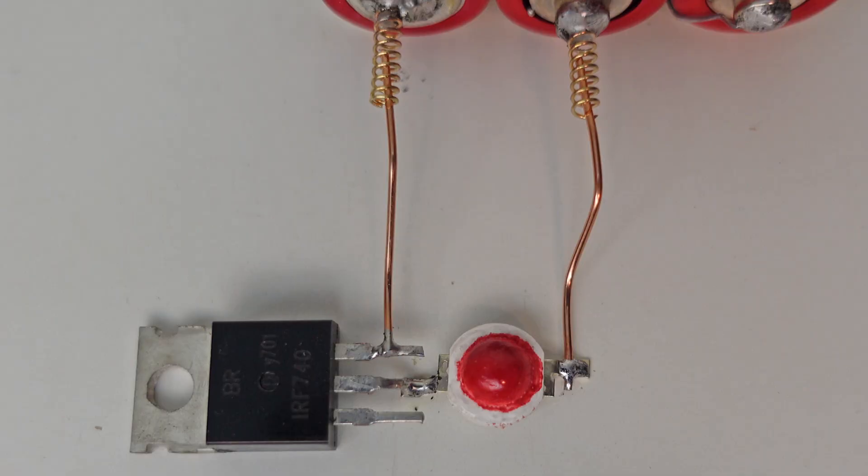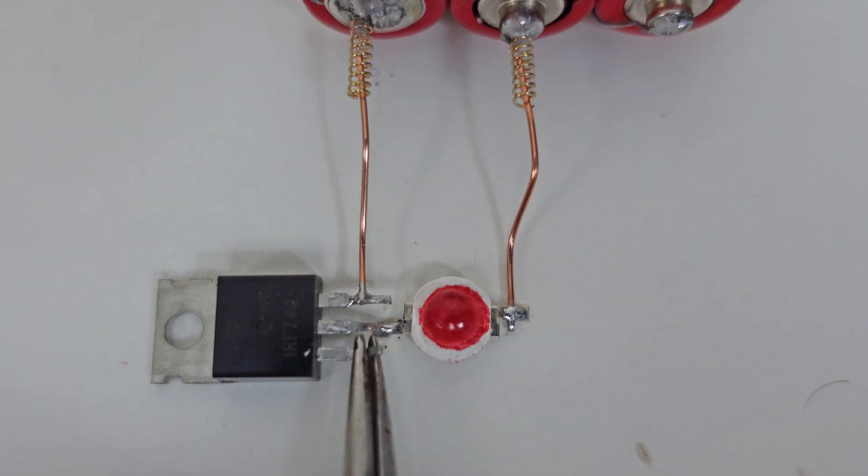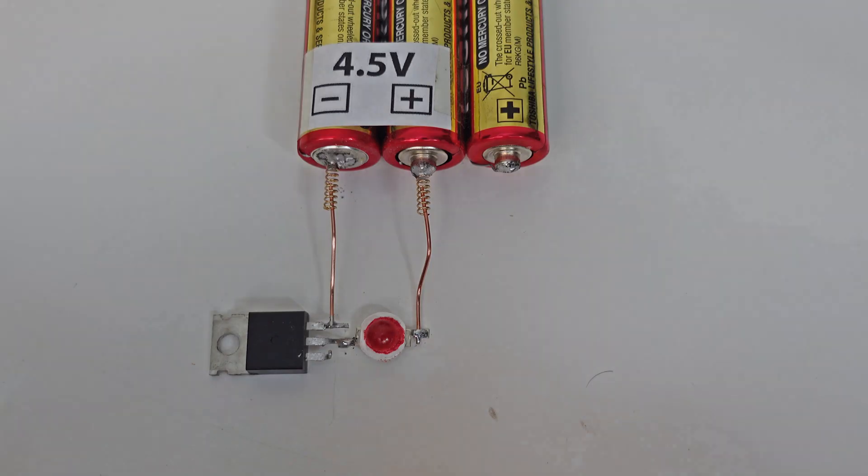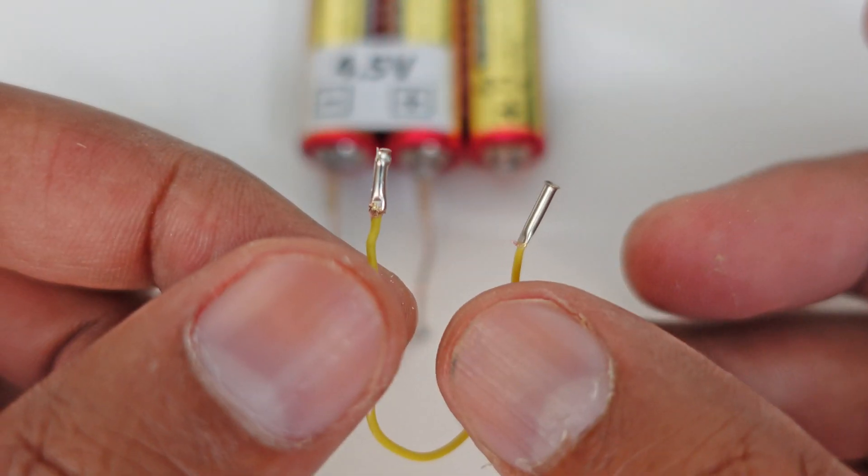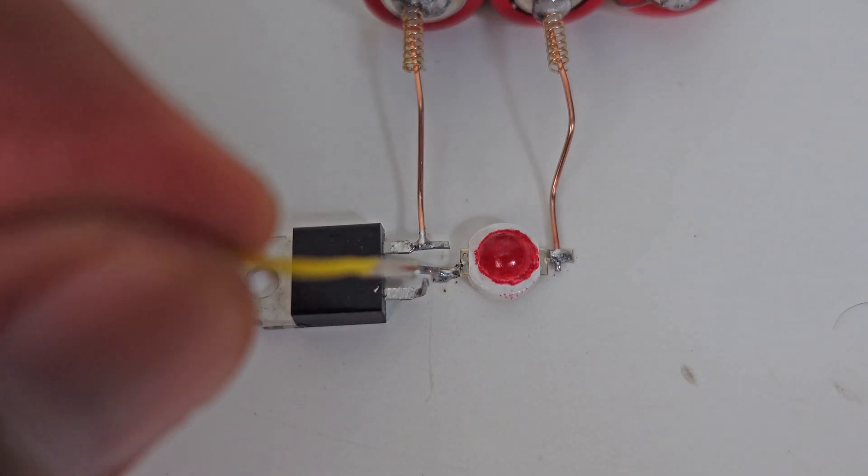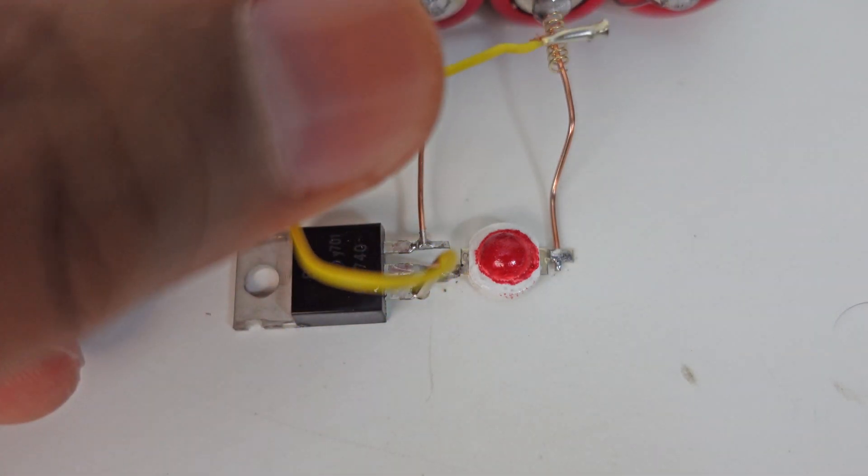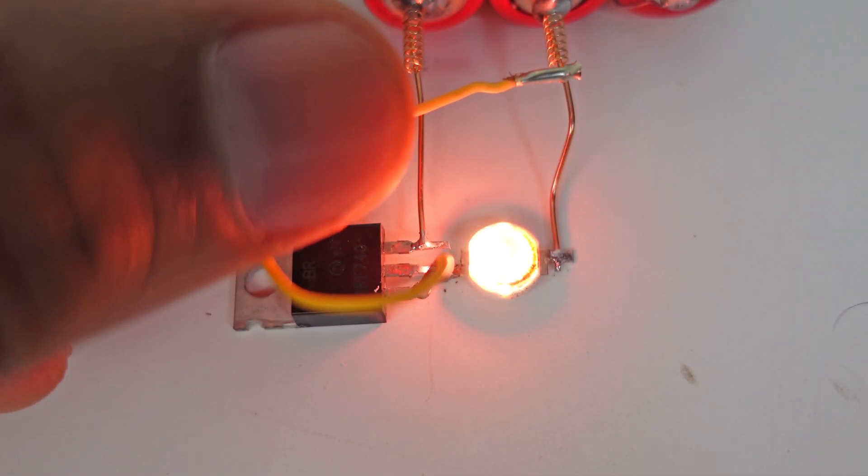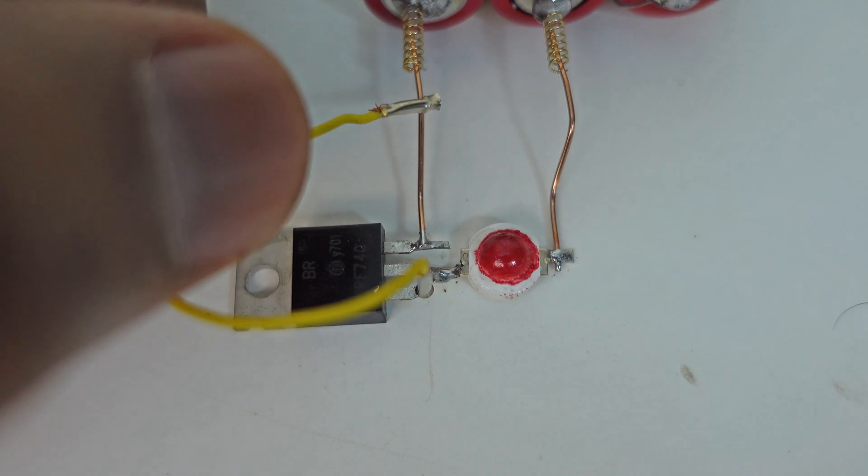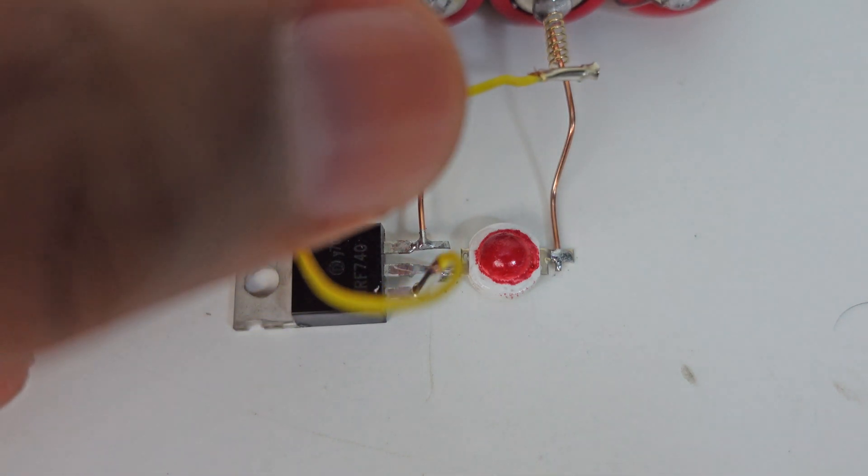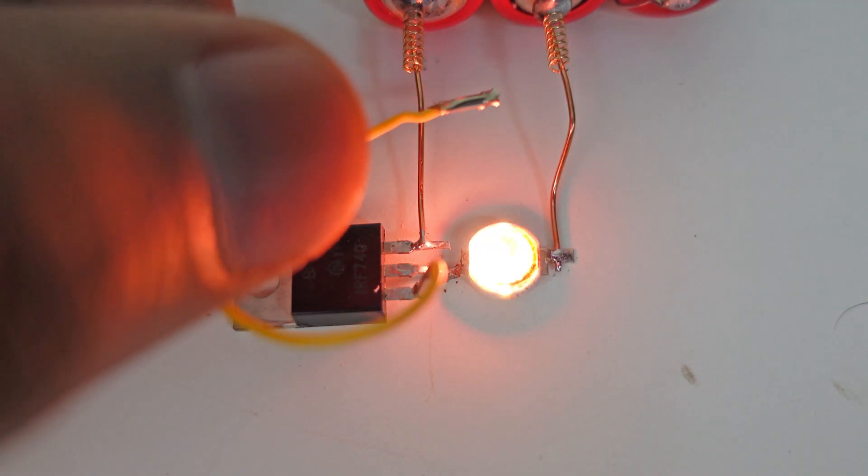As you can see nothing happened. This is the gate of the MOSFET transistor. This is a small wire we have. We connect this wire from one side to the gate of MOSFET. And on the other hand, as soon as we connect it to battery positive, the light turns on. And as soon as we connect it to the negative, the light turns off. No matter how many times you repeat this, the result remains the same.